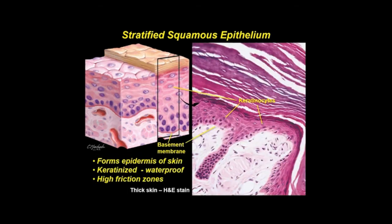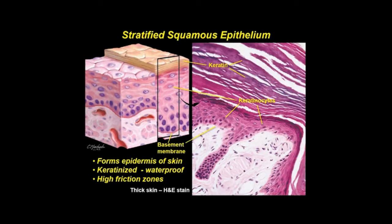In areas exposed to air and subject to abrasion, such as the epidermis of skin, the surface layer consists of dead cells lacking nuclei and containing plates of the protein keratin, which strengthens and waterproofs the tissue. This keratinized stratified squamous epithelium also lines the tympanic membrane, parts of the oral cavity, and some mucocutaneous junctions, including lips and distal anal canal.